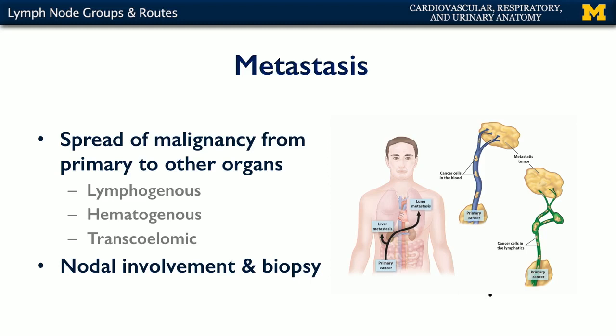Metastasis is the spread of disease or malignancy from its primary site or its site of origin to other organs, and there are many different routes by which metastasis may occur.